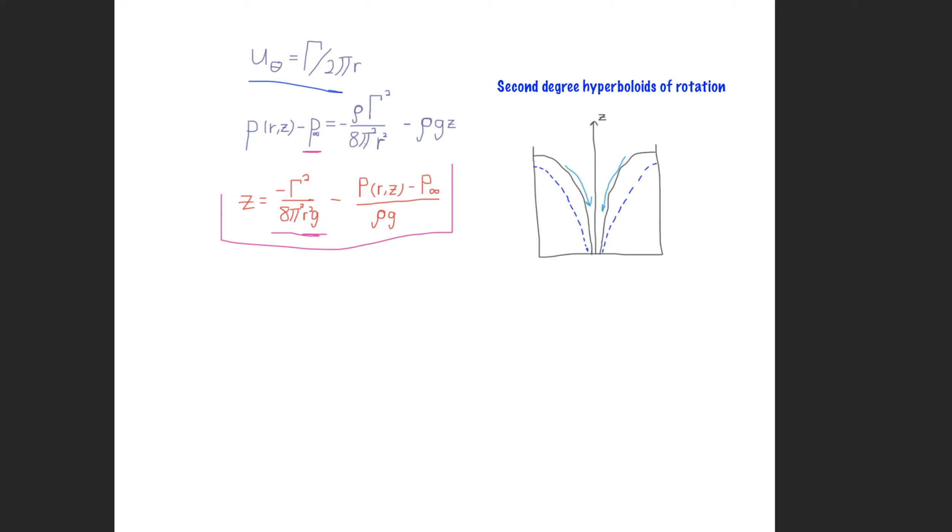So a key takeaway from all of this is that just because it's irrotational, that does not necessarily imply the absence of viscous stresses, but it does imply this absence of net viscous forces, right? So you can have a viscous stress and still have no net viscous force.